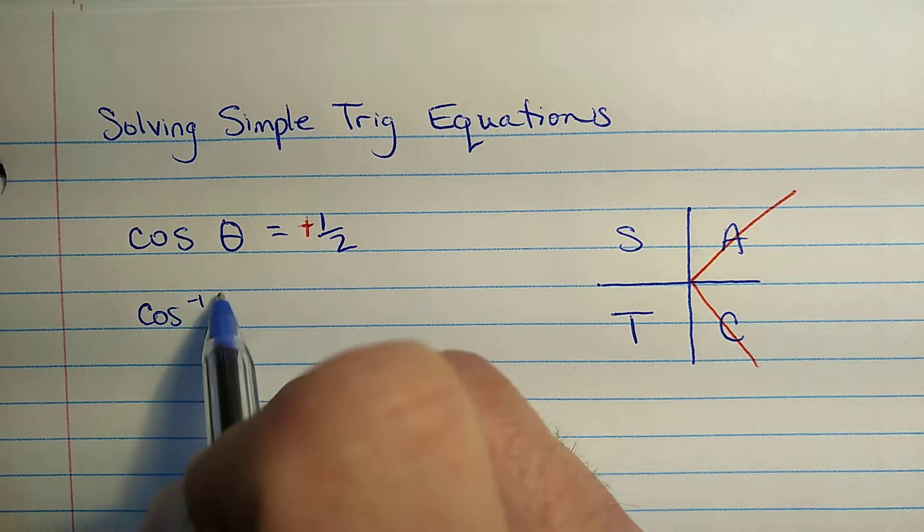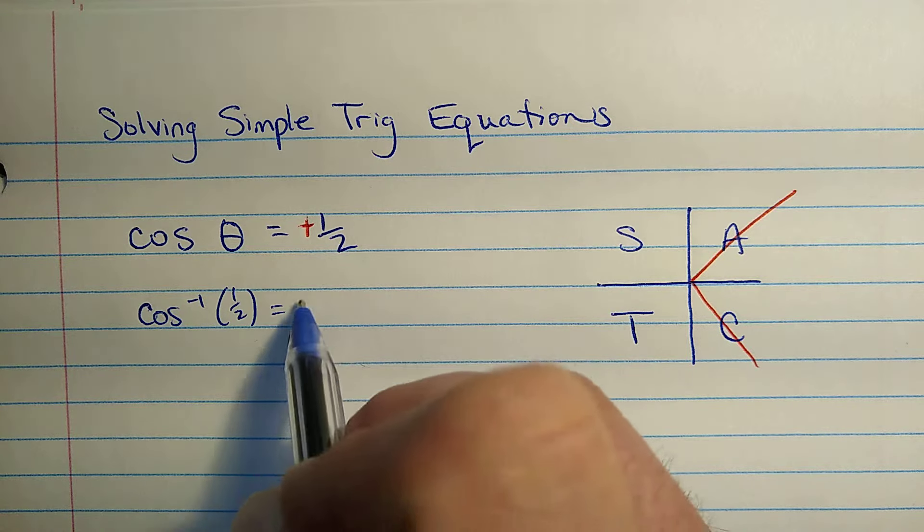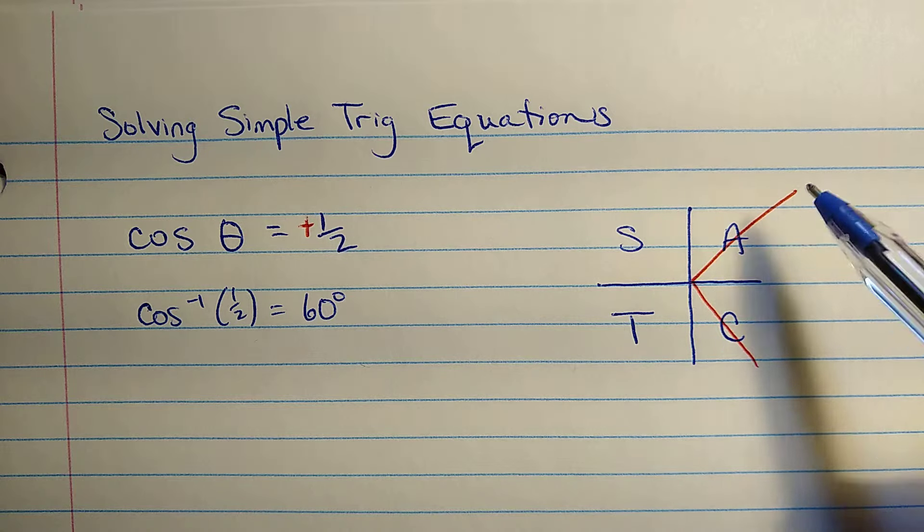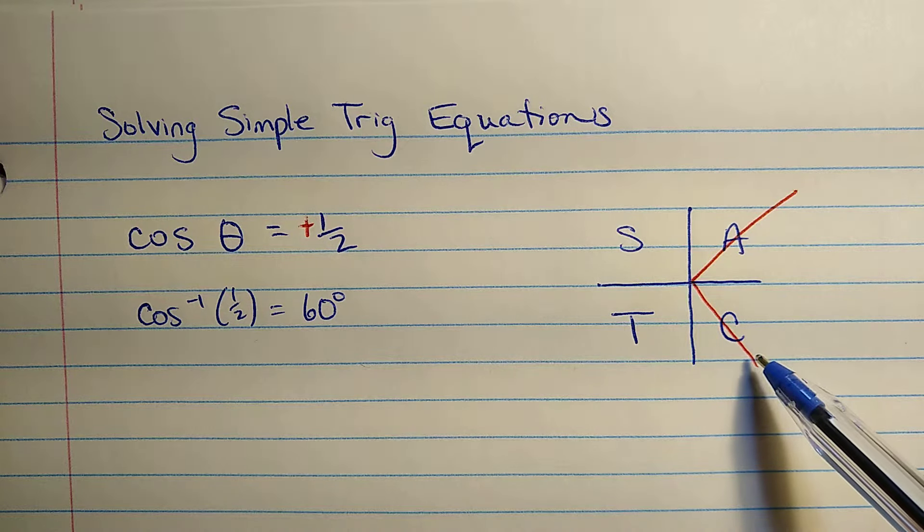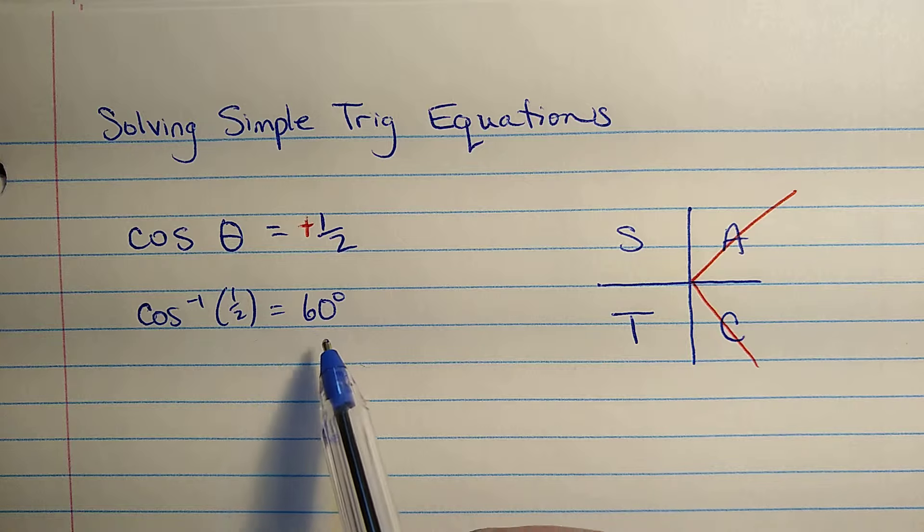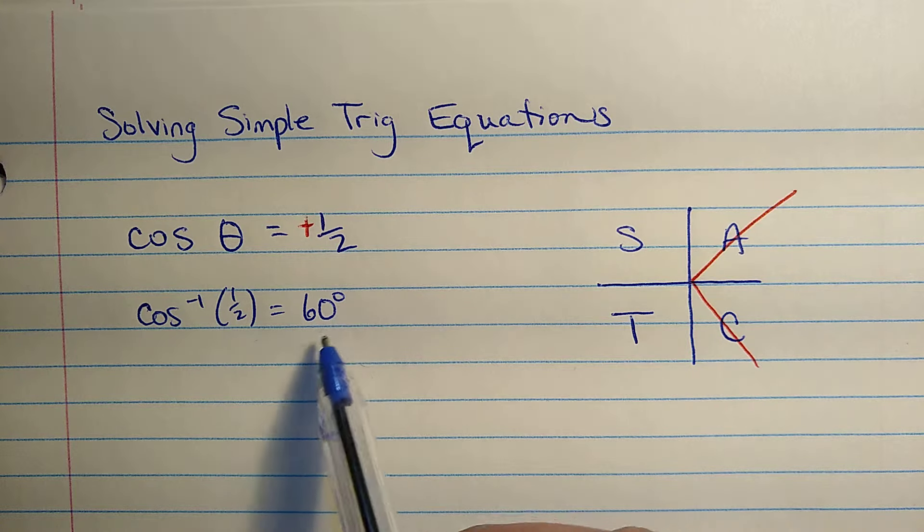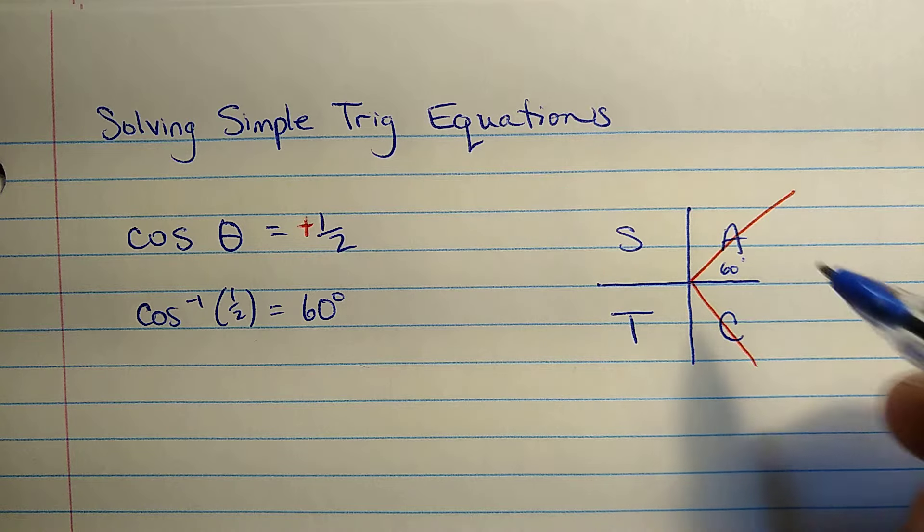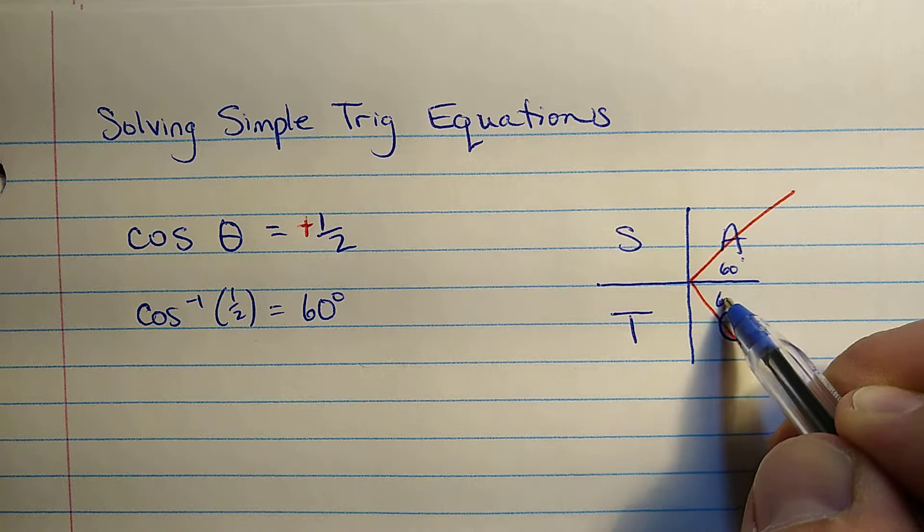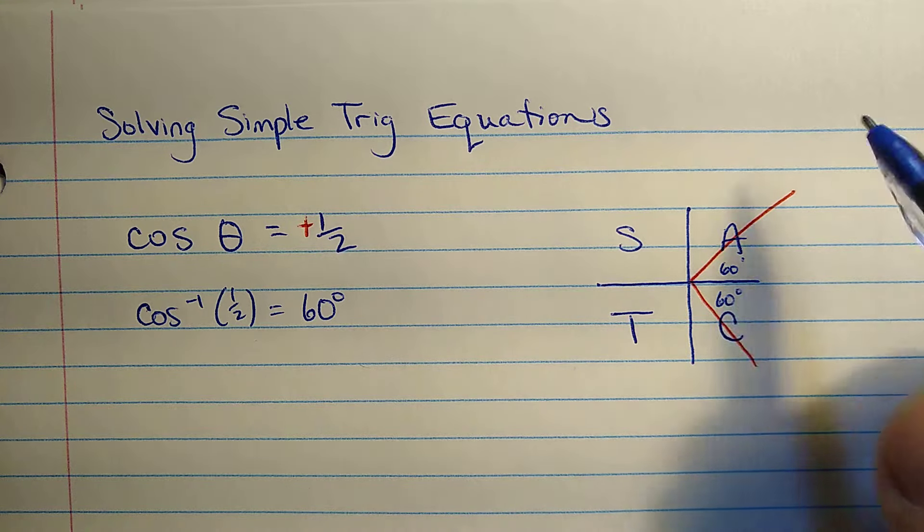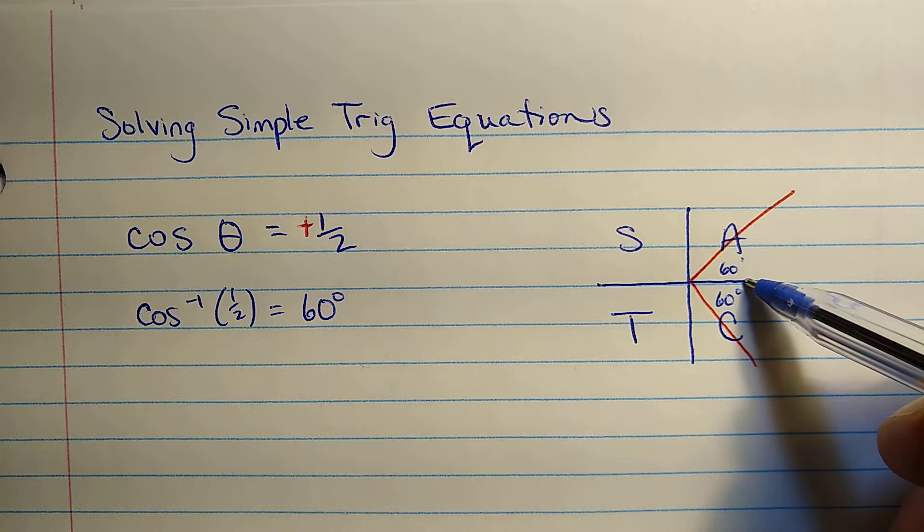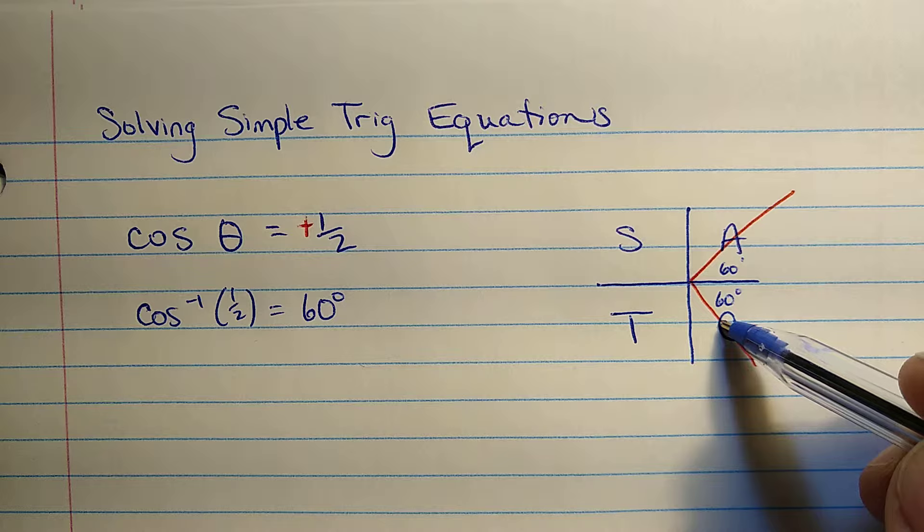so I'll just write cosine inverse of one half is 60 degrees. Now that is the quadrant 1 solution, but there's another corresponding solution. So first off, let's notice this is an acute angle. It would be the acute angle right here, 60 degrees. And so there's another related angle with the same cosine, which is 60 degrees from the x-axis, this direction. That is 360 minus 60.